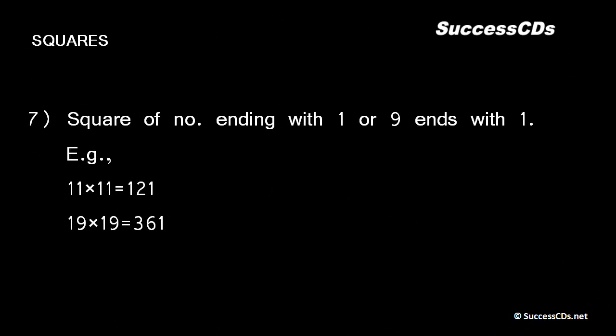The square of a number ending with 1 or 9 always ends with 1. For example, 11² = 121 and 19² = 361, both ending with digit 1.